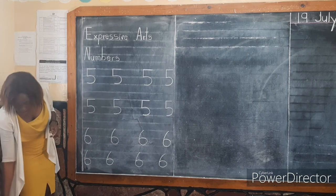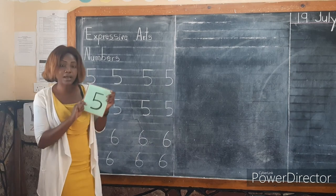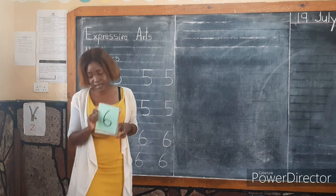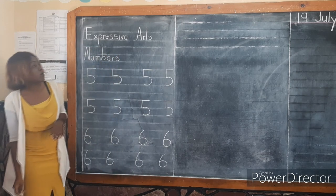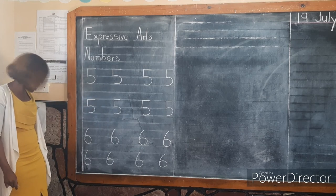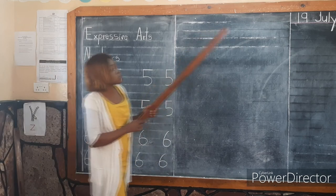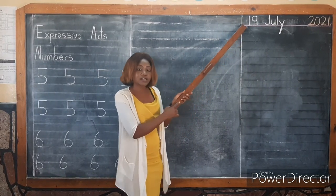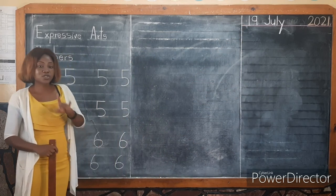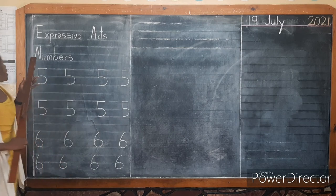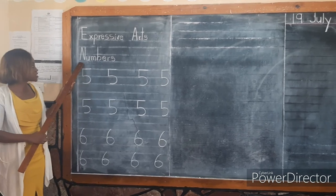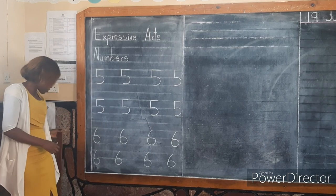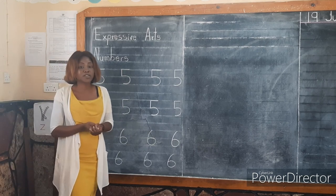Our numbers today — we have been writing these two numbers: number 5 and number 6. Now we are going to copy the numbers. But before we copy, we are going to start by writing the date, which is 19 July 2021. After writing your date, write your name. Then write our title for today, which is just 'Numbers' — a very short title. Then copy our two numbers, number 5 and number 6. Remember to always write nice things.